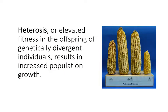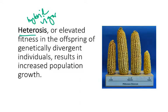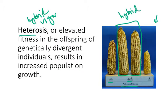Oftentimes, that increased population size is actually due to something called heterosis, or sometimes called hybrid vigor. This is elevated fitness in the offspring of individuals that are genetically different. The example shown here — these two corns in the middle are hybrids, which were produced from parents that are genetically different. When you breed those two genetically different individuals, you end up with a hybrid that has increased fitness, so this corn is actually bigger.